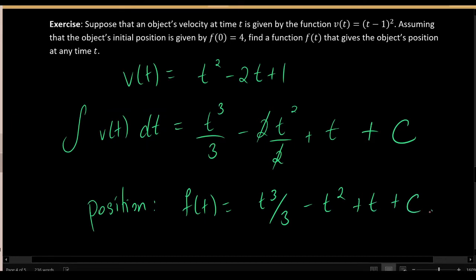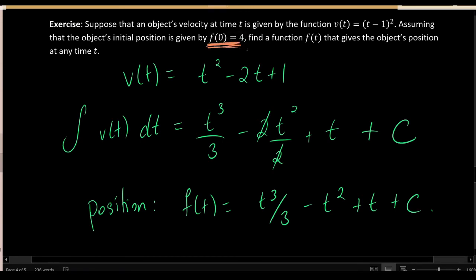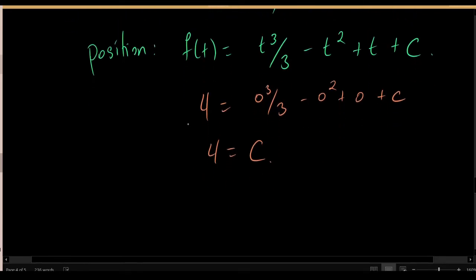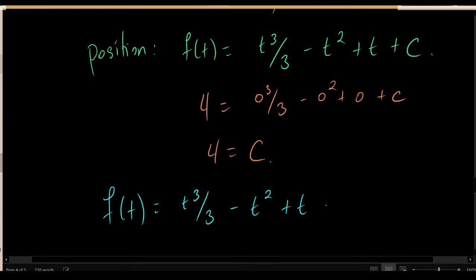But what is the value of C for my particular question? The key to finding the value of C is the object's initial position. The position at t equals 0 is given by 4. So if I replace t with 0 in this equation, I know the output should be 4. Simplifying, the C value is 4. Therefore, my position function is t cubed over 3 minus t squared plus t plus 4.